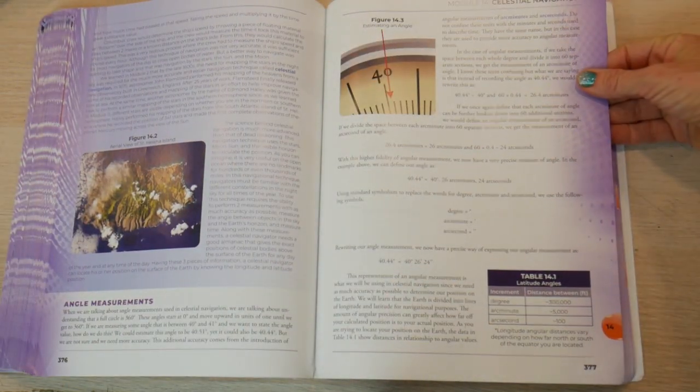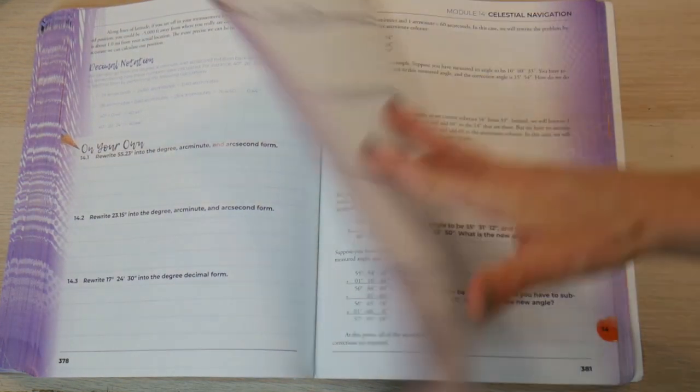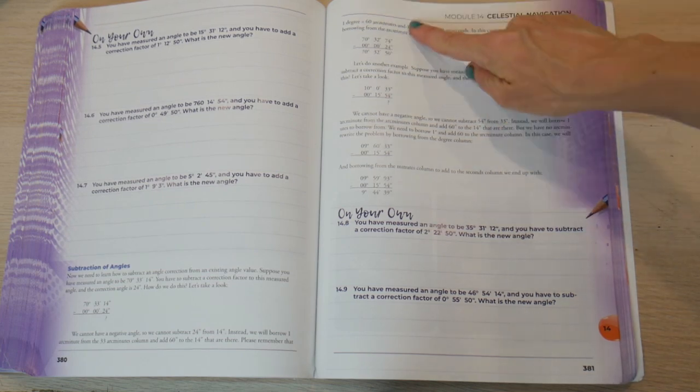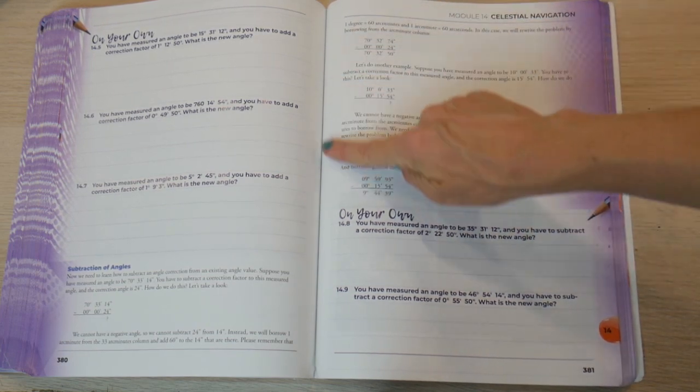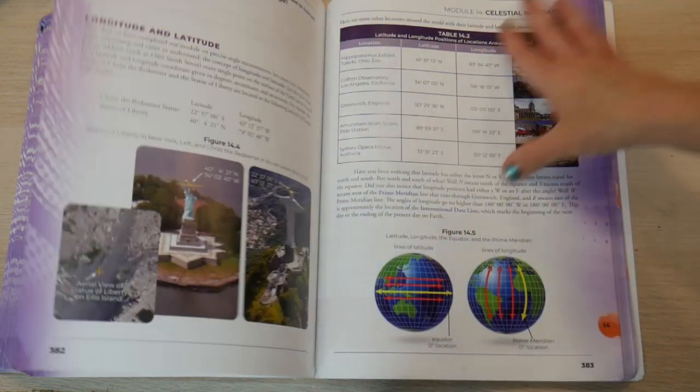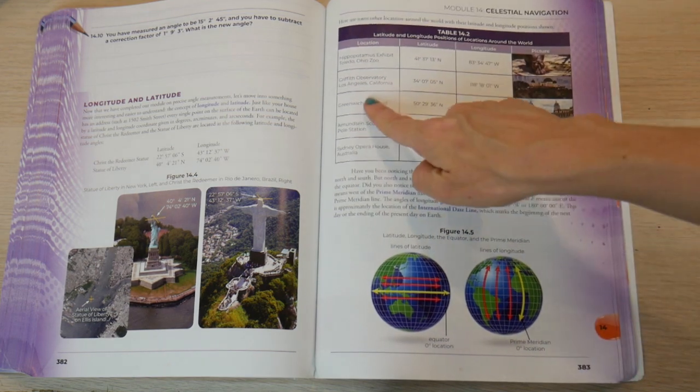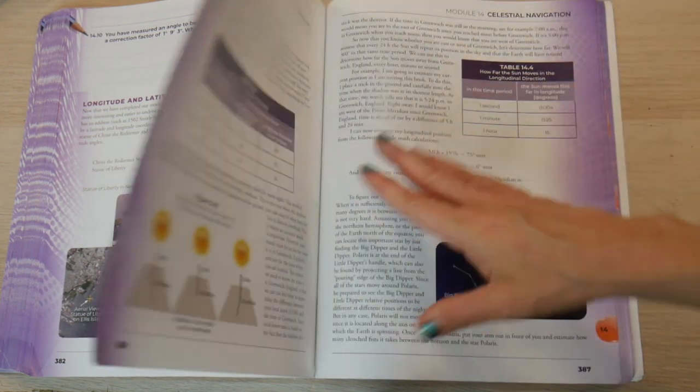And then this is going to be celestial navigation, which to me kind of goes along with the telescope, because you learned your constellations. But it does give you a lot of the math behind the navigation right here. Angles, prime meridian, equator, latitude longitude, that kind of stuff.